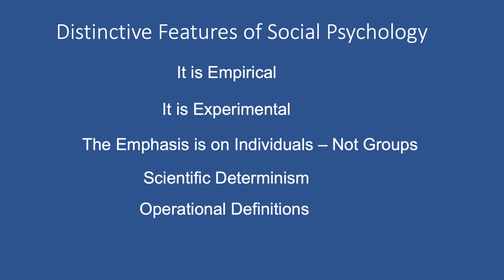Social psychologists also depend very heavily on something called operational definitions. If I'm using language that appears in everyday life — say I'm doing a study on how people become romantically attracted to each other — I have to be able to specify what operations I'm using to define interpersonal attraction. Is the person filling out a scale from 1 to 10? If that's what you're doing, you are operationally defining interpersonal attraction as the rating an individual gives to another using a 10-point scale. Whether you're talking about attitudes, aggression, or interpersonal attraction, you need to rely very heavily on your operational definition.